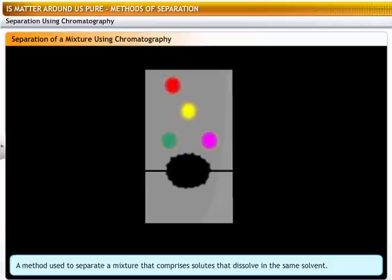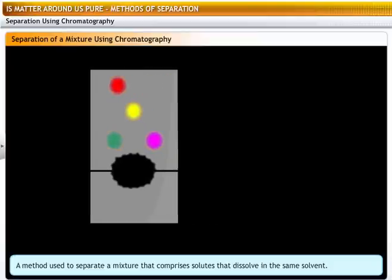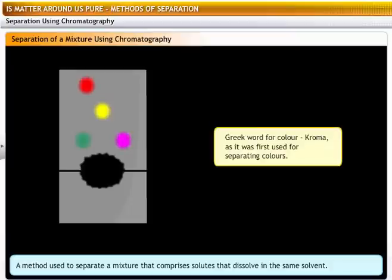This process of separation is called chromatography. This method gets its name from the Greek word for color, chroma, as it was first used for separating colors. Chromatography is specifically used to separate a mixture that comprises solutes that dissolve in the same solvent.